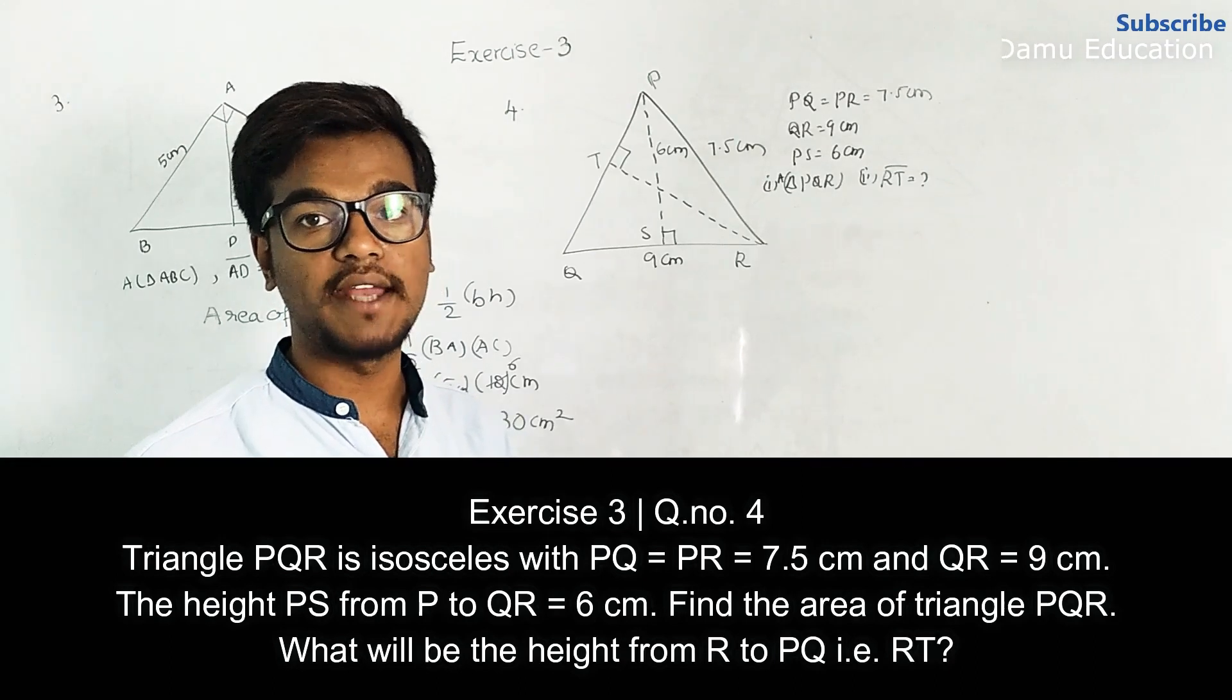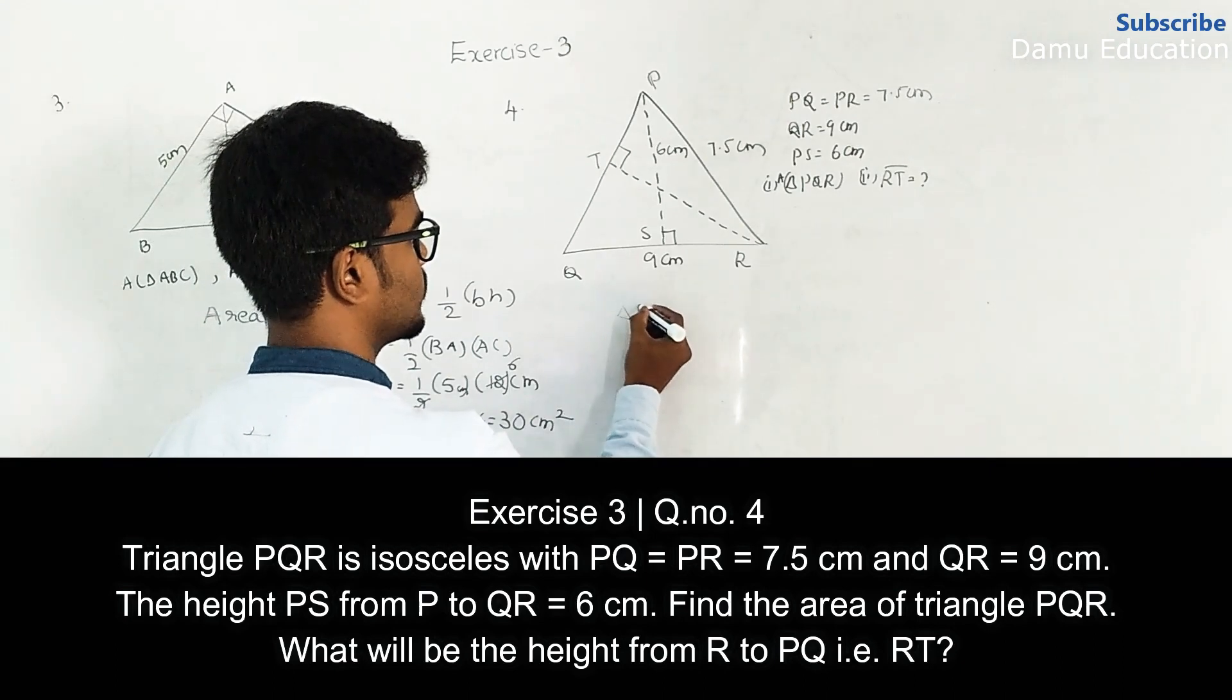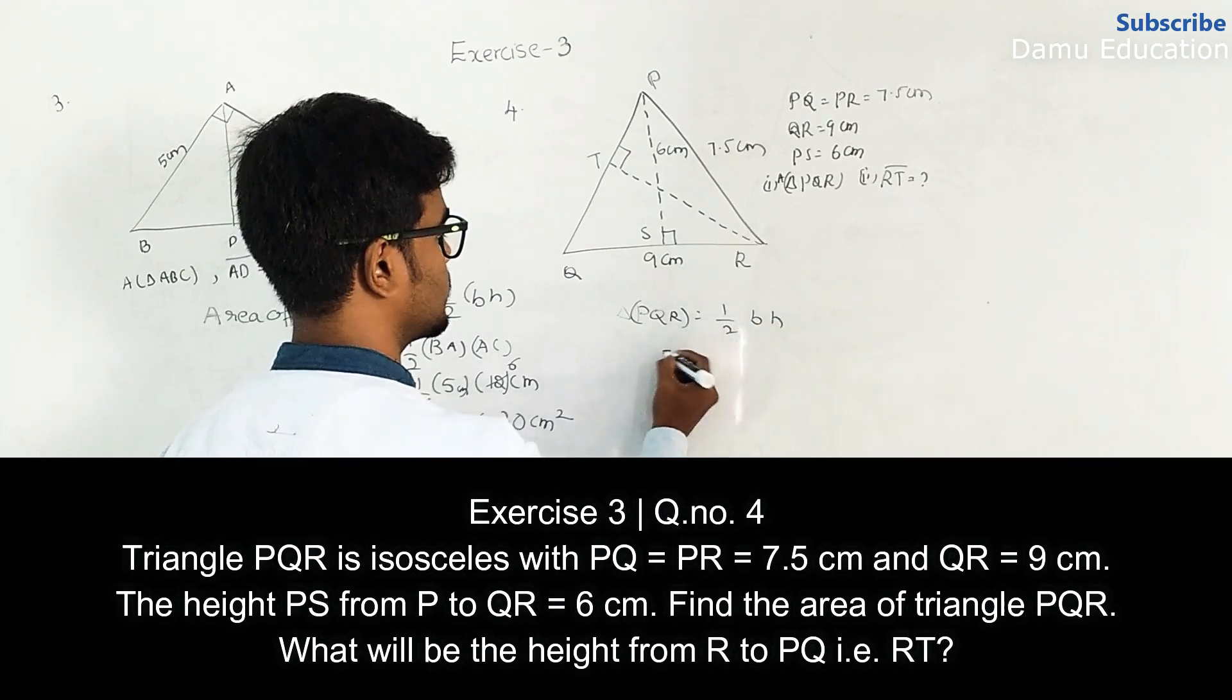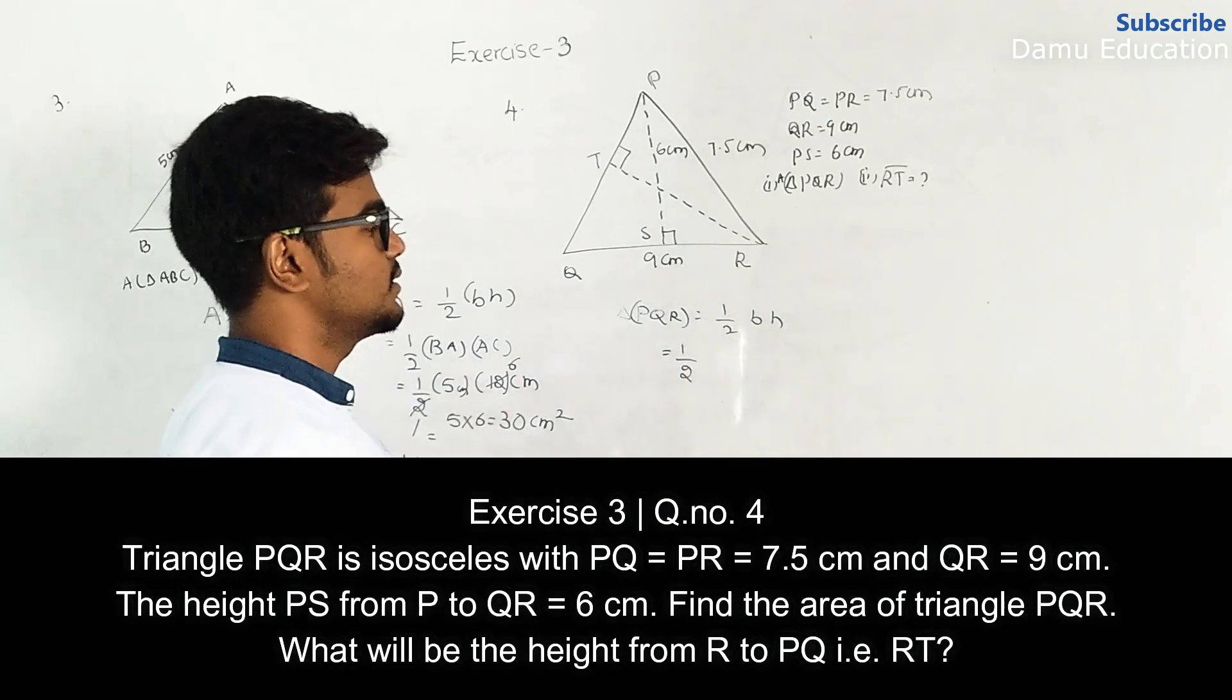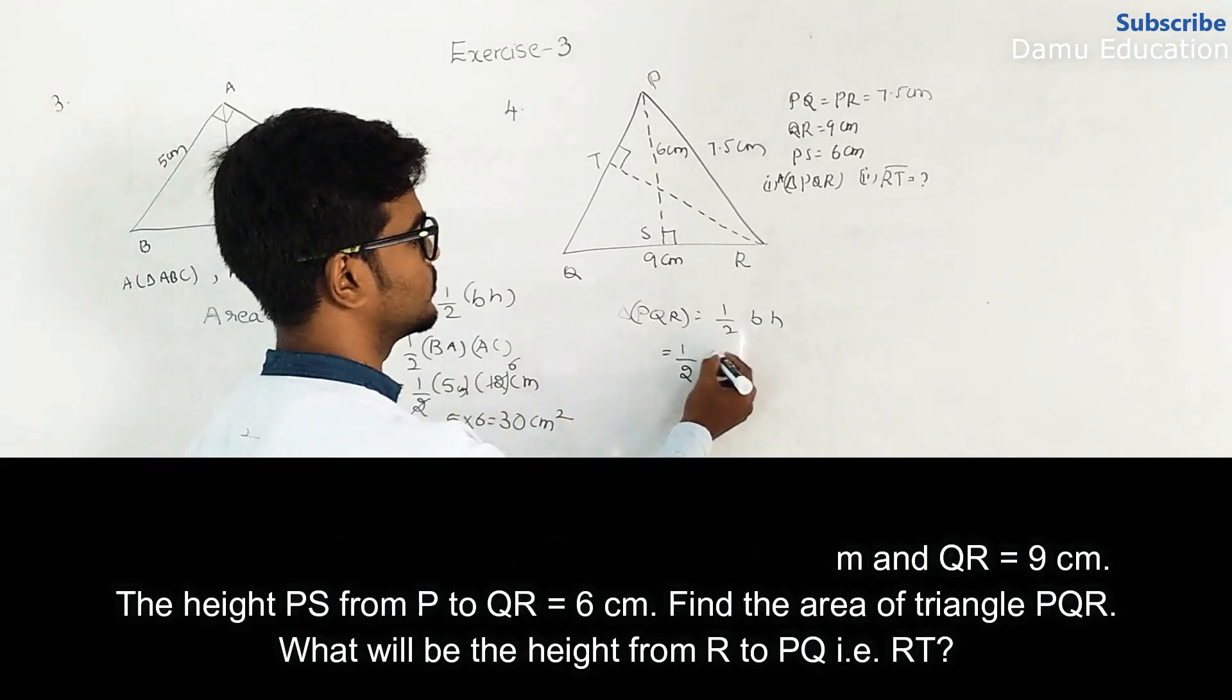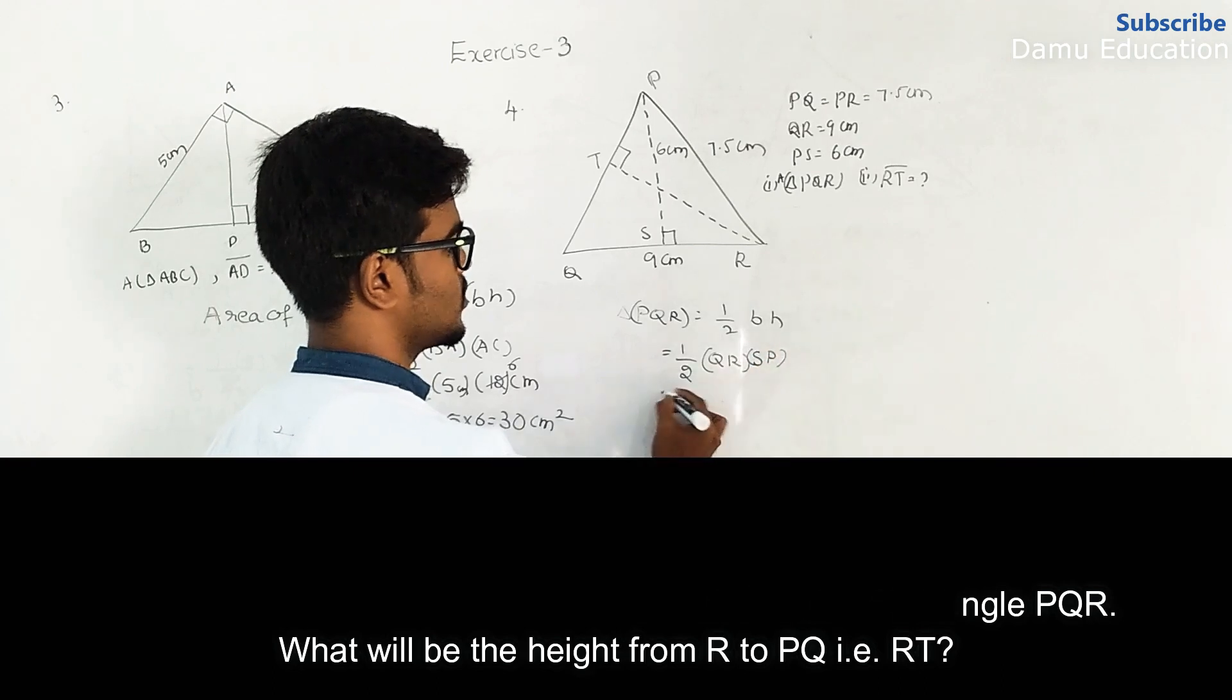So here triangle PQR, area equals half into base into height. So half into base—which base we need to take? It's better to take QR and height is SP.